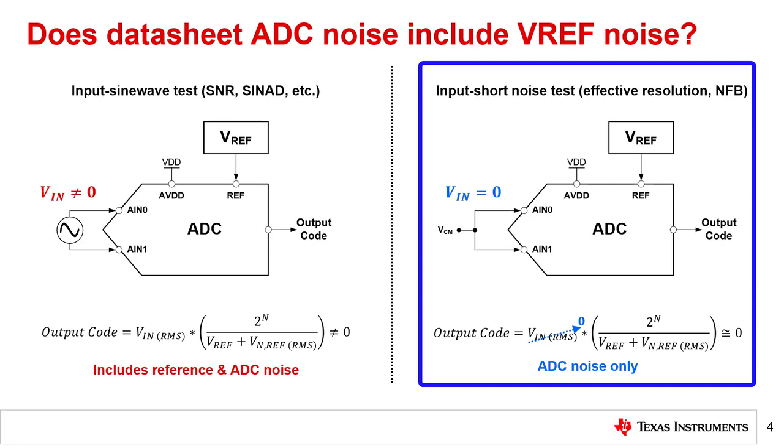Is there a way to generalize the impact that reference noise has on the system? The next slide derives an expression for this relationship by manipulating the output code equation shown here.